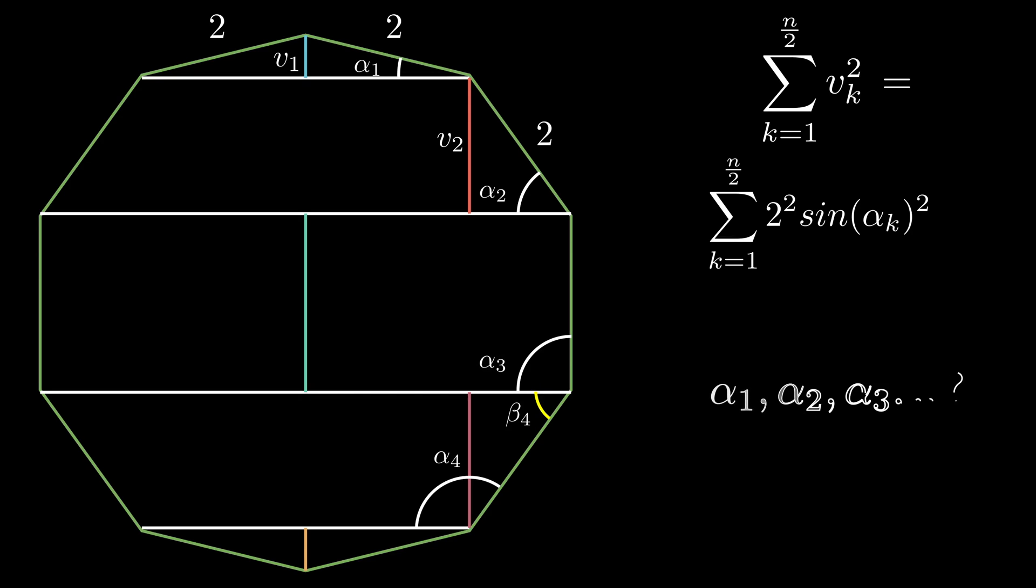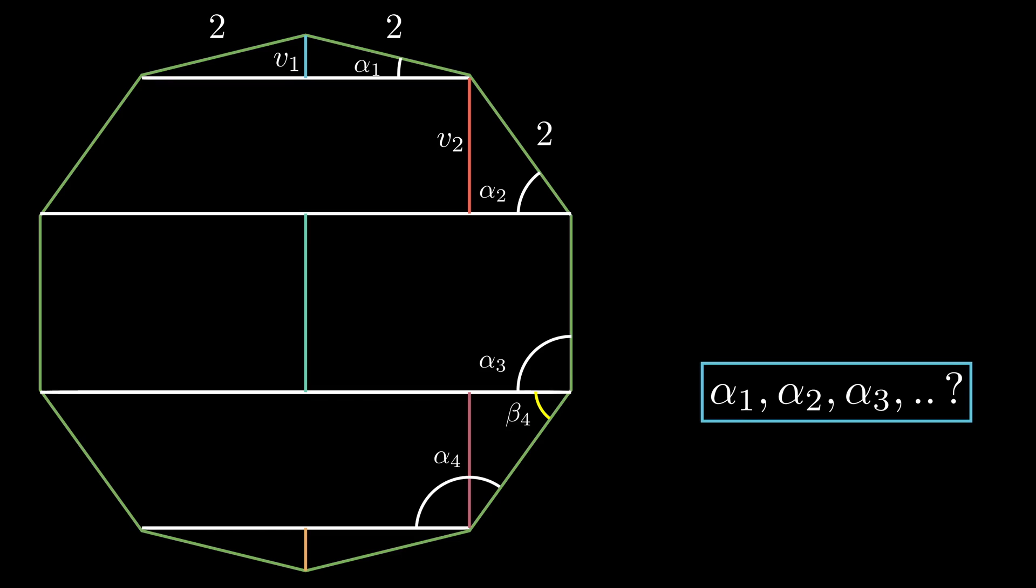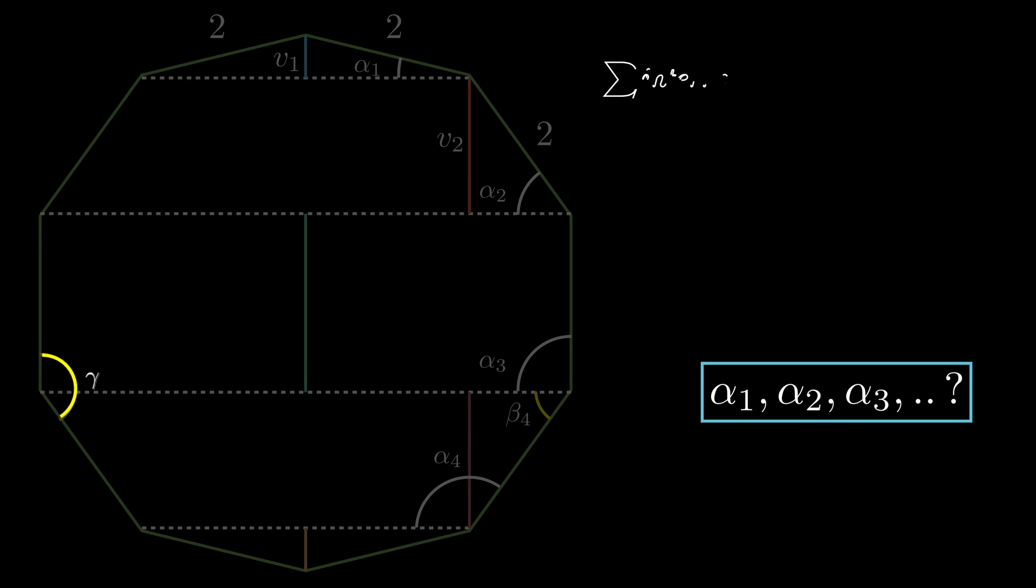The polygon is regular, so it should not be hard to figure out these angles. The total of all internal angles is pi times n minus 2, so each internal angle is an nth part of that. The first alpha angle is then half of pi minus this, which is pi divided by n.